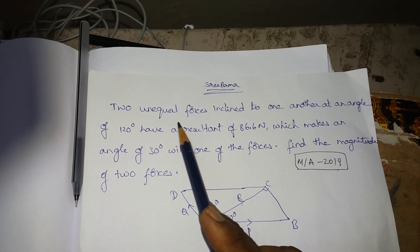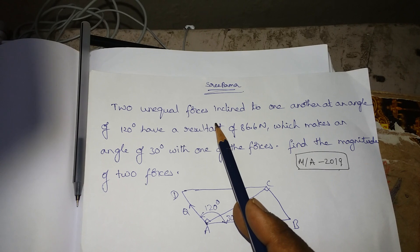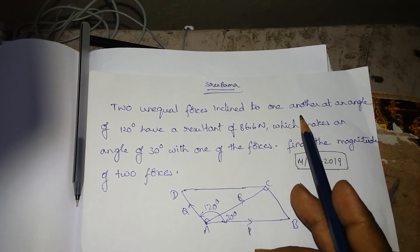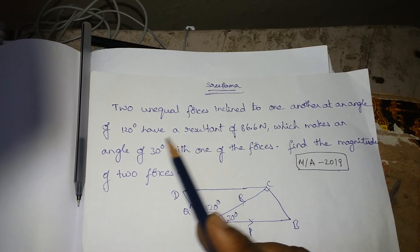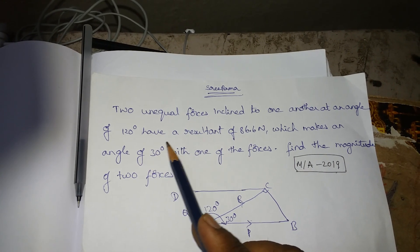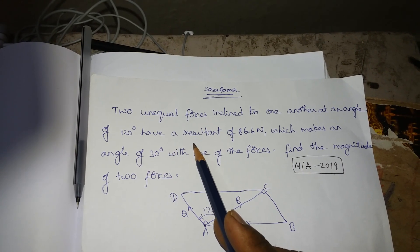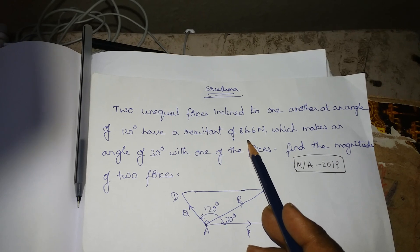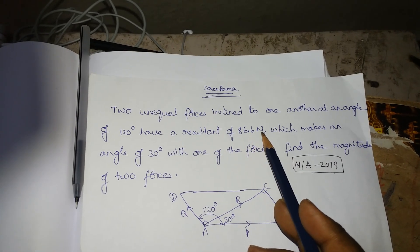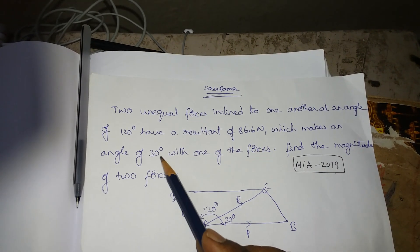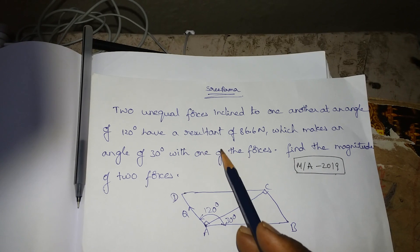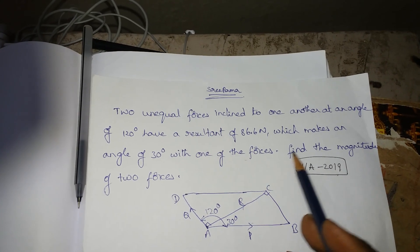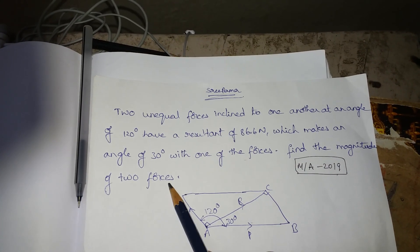Two unequal forces inclined to one another at an angle of 120 degrees having a resultant of 86.6 newtons, which makes an angle of 30 degrees with one of the forces. Find the magnitude of the two forces.